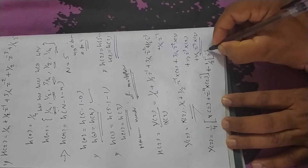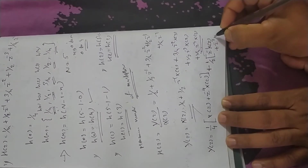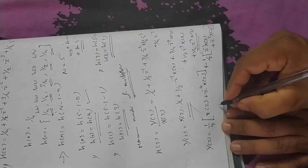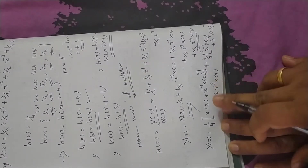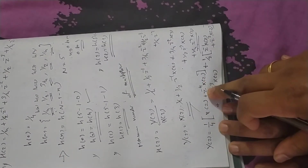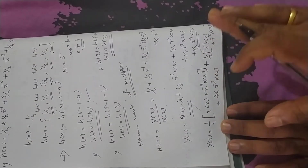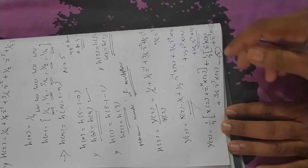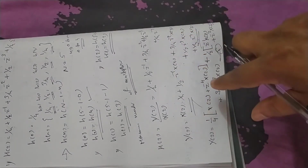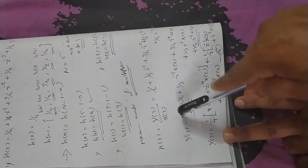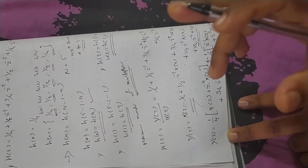z raised to minus 1 X(z) and z raised to minus 3 X(z) are grouped. Plus 3/4 z raised to minus 2 X(z). This is how you get the rearranged expression. You can complete this step in the realization. This is the first step we are going to realize.